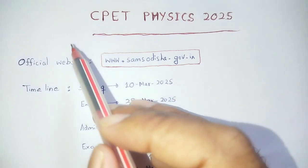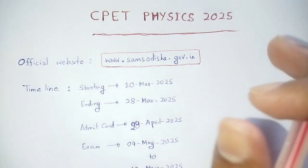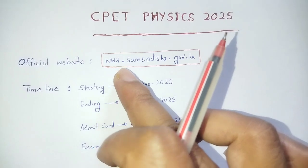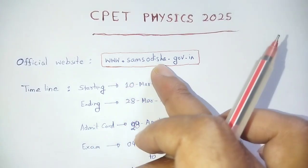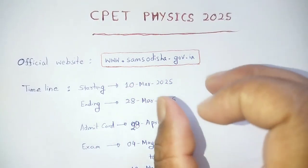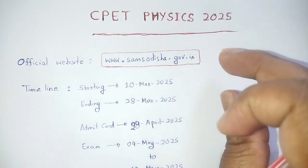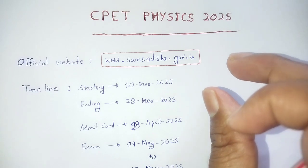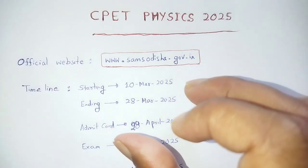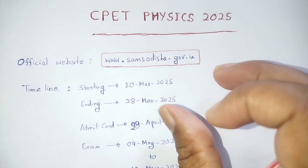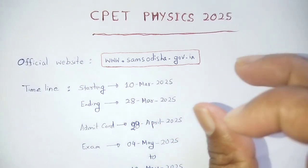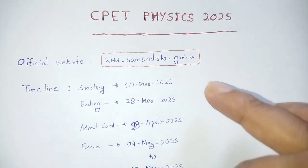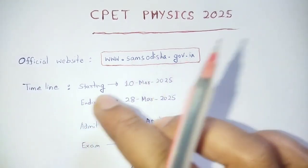You have to follow the official website www.samsodisha.gov.in. If you download the common prospectus, you can get all the exam-related information from it. The important key dates form the timeline.